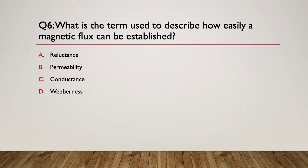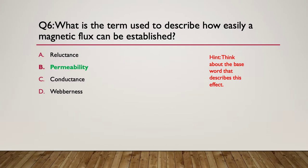Question 6: what is the term used to describe how easily a magnetic flux can be established? Choices: reluctance, permeability, conductance, or weberness. Think about the base word. Reluctance is the opposition to flux, so it's not that one. Permeability is the answer — describing how permanent a flux can exist. Conductance is an electrical term and 'weberness' doesn't exist.